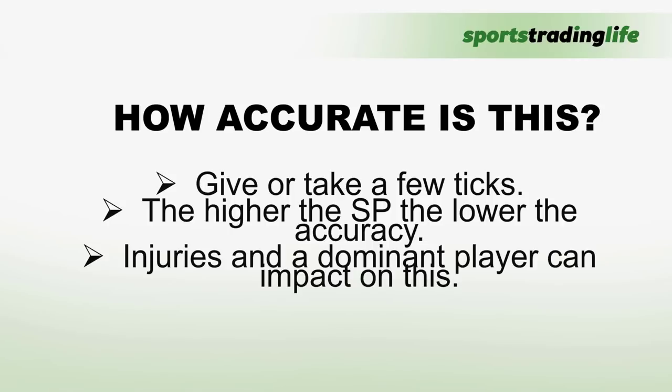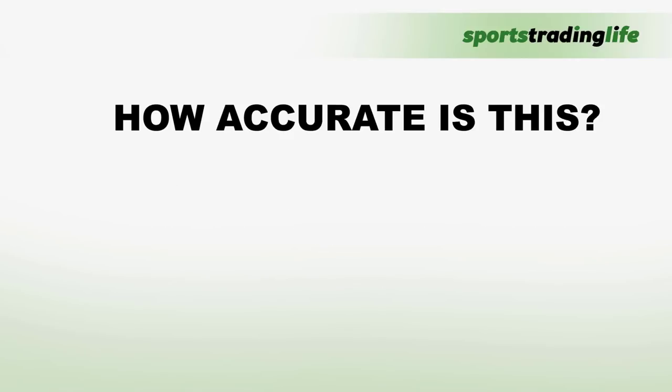A dominant player can also impact this, but not hugely. When a player is really dominant, it can pressure the market into taking a few extra ticks — that's just greed from traders. It will push the price a little bit lower, but probably only by a few ticks. The best approach is just to get a ballpark figure of where you expect the odds to be after a player breaks or wins a set.